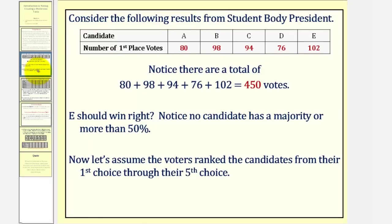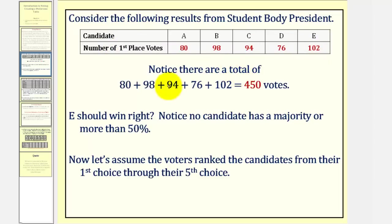Let's begin by considering the following results from a student body presidential election. Notice how the candidates are listed in the first row from A through E, and the second row tells us the number of first place votes. Notice if we add the second row, this tells us there are a total of 450 votes.